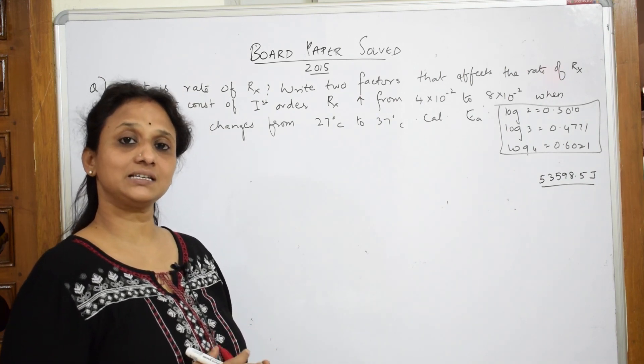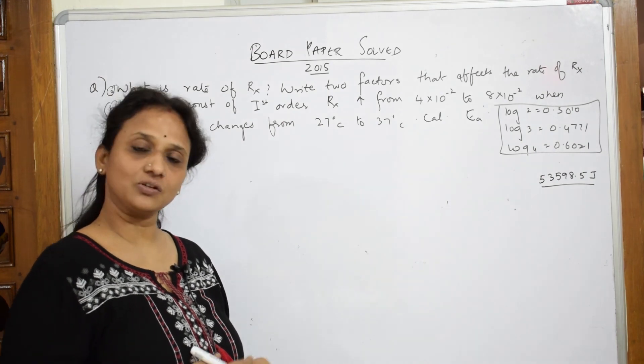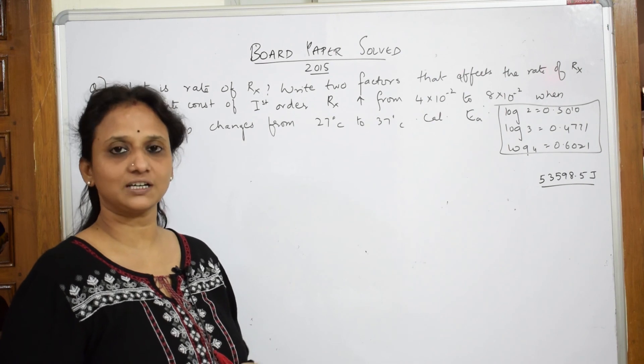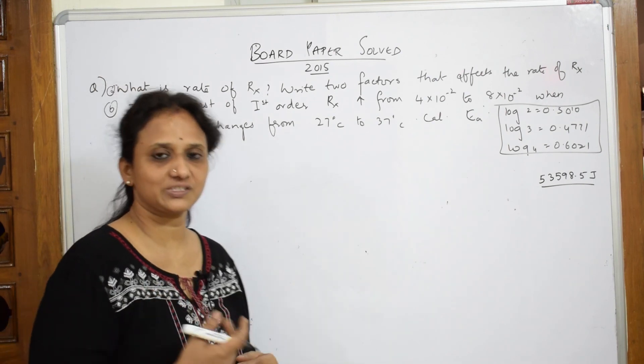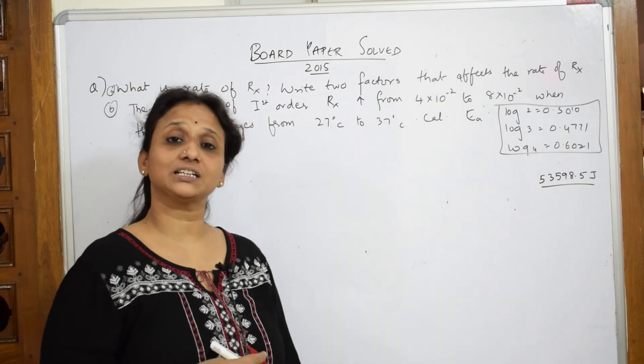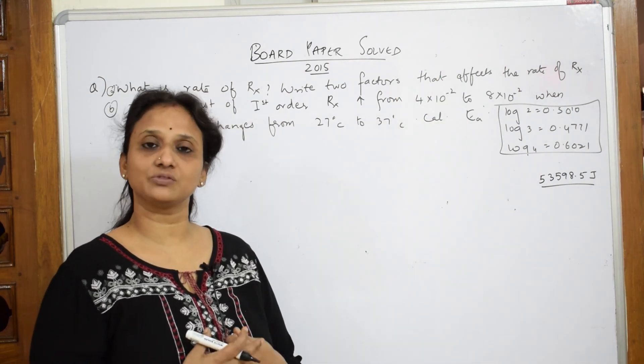What is the rate of reaction? Basically, it is a decrease in concentration of the reactants and increase in concentration of the products per unit time. Please watch the video. I have done the first or second video of chemical kinetics.